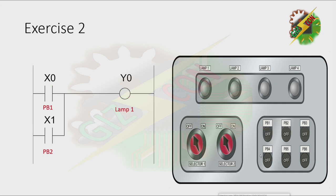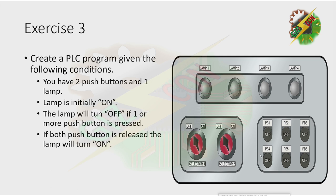Okay, let's go to our next example. Exercise 3: Create a PLC Program given the following conditions. You have two push buttons and one lamp. The lamp is initially on. The lamp will turn off if one or more push buttons is pressed. If both push buttons are released, the lamp will turn on.